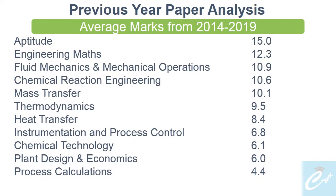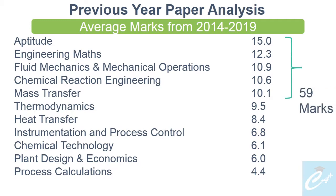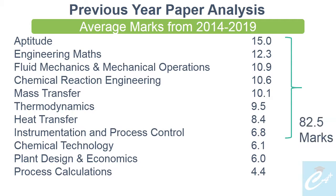This time I have included maths and aptitude as well. Arrange this list from highest to lowest marks and you will find that fluid mechanics, chemical reaction engineering, and mass transfer have the highest weightage. If you total these subjects' averages, including maths and aptitude, you will get around 59 marks. Adding the next 3 subjects — thermodynamics, heat transfer, and instrumentation and process control — the total will be 83.5 marks.